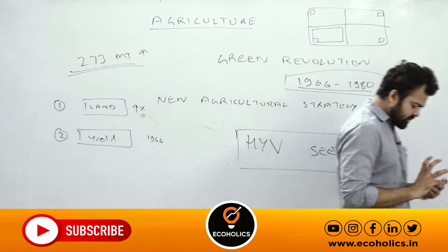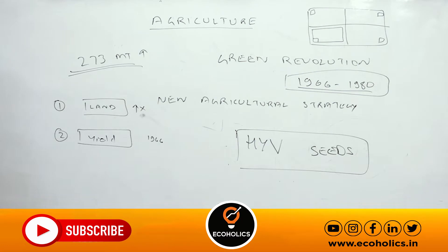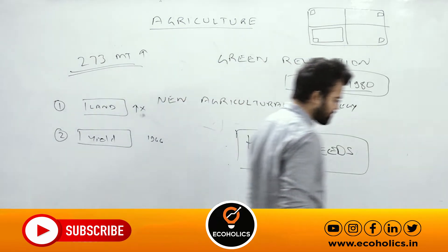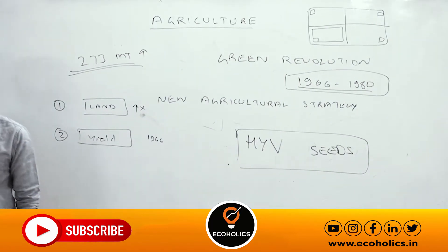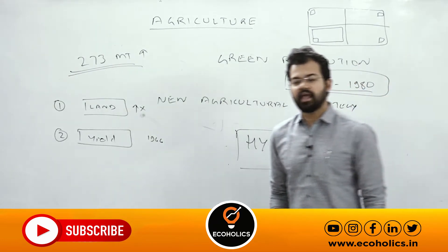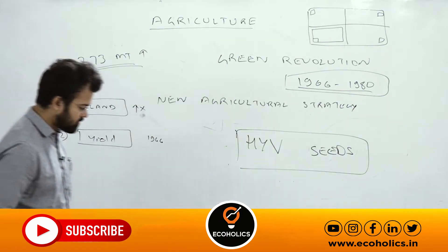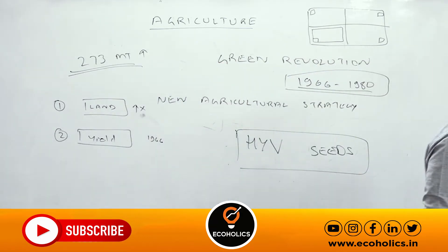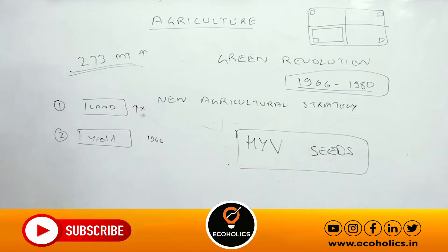Right after 1995, India again experienced a decline in agricultural growth rate. The main reason behind low productivity was the shrinking of land holdings due to rapid urbanization and fragmentation of land holdings.